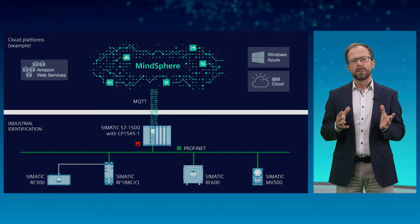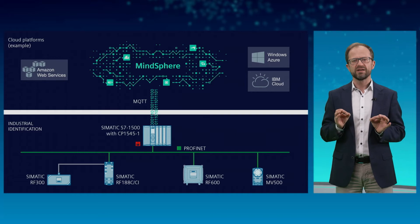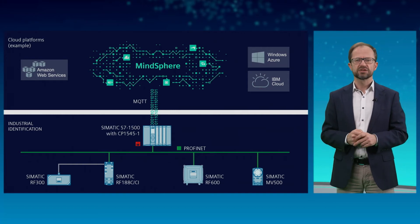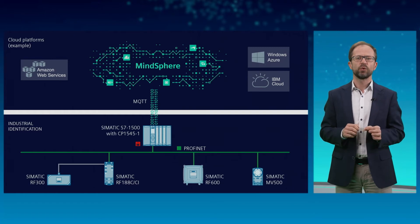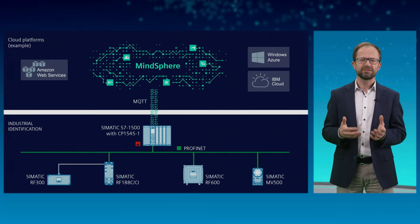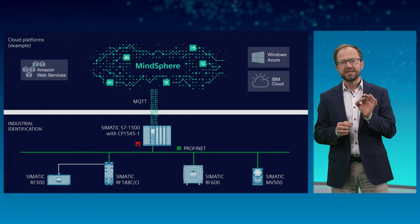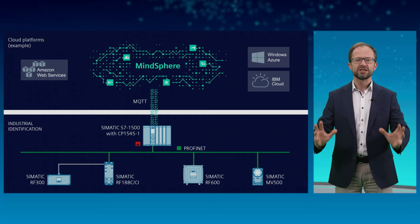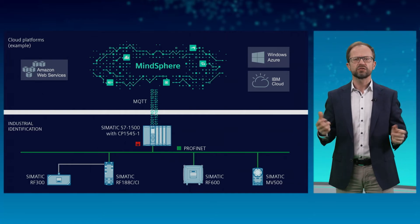A good start is the production plant itself. There are two important aspects: the identification of the goods produced and the automation system of your machines. The digital production file requires all the data relating to the manufactured goods. RFID and optical identification systems are key components. Together with the data from the automation system — in this case the S7-1500 PLC — the basic data set is created and transported to a cloud platform via an industrial IoT gateway.